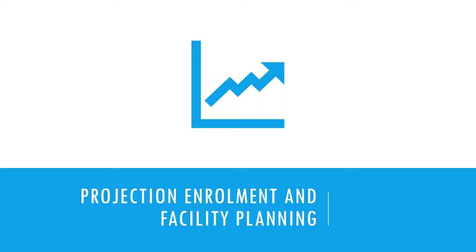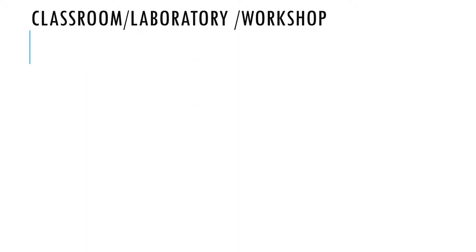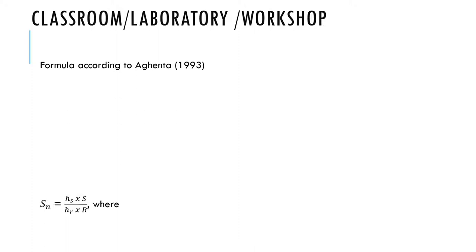For example, if you look at class size in primary and secondary school, it is between 35 to 40 students in a particular class. That serves as a guide when determining the total number of classrooms to build. Ultimately, the total number of students enrolled in a particular school determines the total number of classrooms, laboratories, or workshops that would be built.